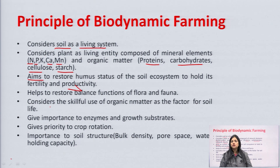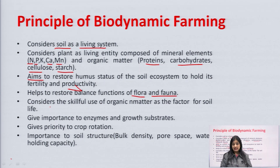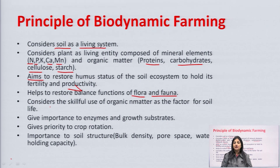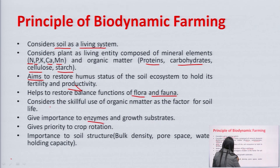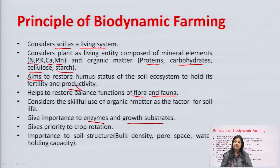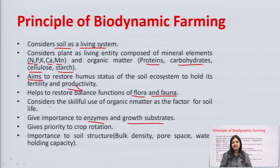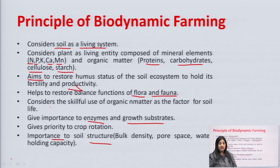Biodynamic farming also helps to restore the balanced functions of the flora and fauna existing in the soil. It considers the skillful use of organic matter as effective for soil life and fertility, enhancing crop productivity. It also gives importance to enzymes and growth substrates present in the soil. Priority is given to crop rotation — the same crop should not be grown repeatedly to deplete the same nutrients. Leguminous plants are grown to maintain the balance of mineral content. It also gives importance to soil structure, including bulk density, pore space, and water holding capacity.